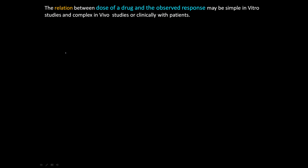As we continue discussing the introductory principles of pharmacology, we're going to talk about the relationship between the dose of a drug and the observed response. The dose of the drug and the observed response can be simple or complex - simple in vitro studies in petri dishes when we isolate certain enzymes in a controlled environment, but more complex in vivo studies or clinically with patients.